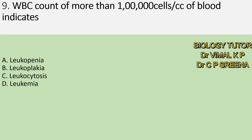Ninth question: WBC count of more than 1 lakh cells per cc of blood indicates — A. Leukopenia, B. Leukoplachia, C. Leukocytosis, D. Leukemia. Which is the answer? Here answer is D — Leukemia.